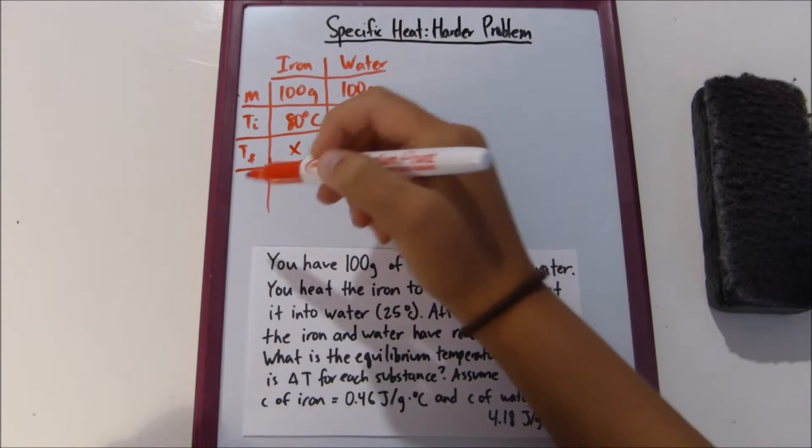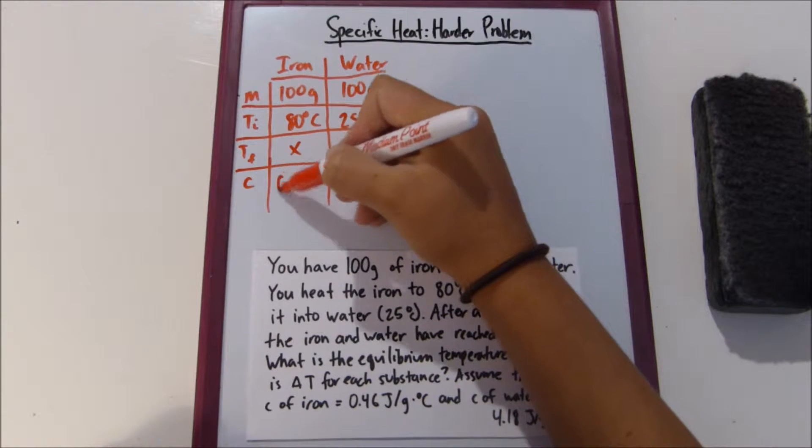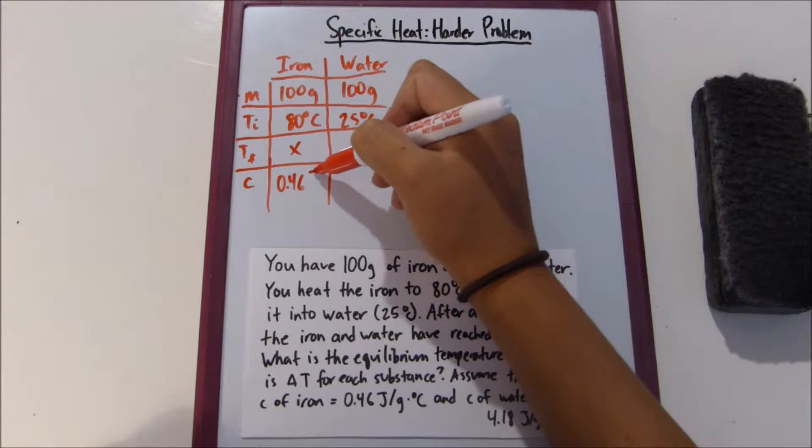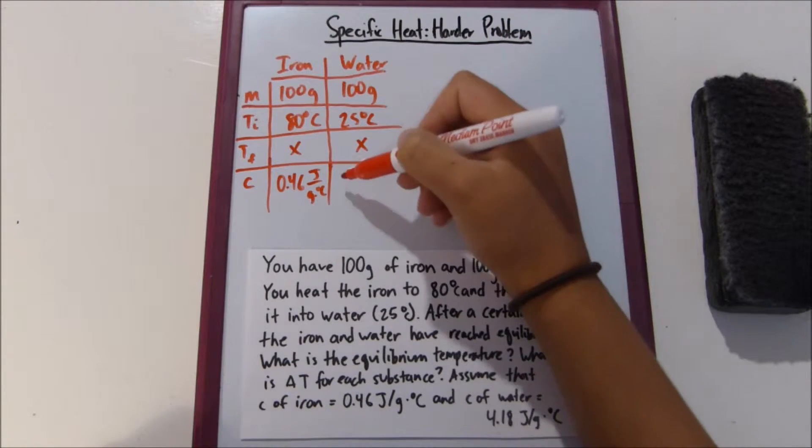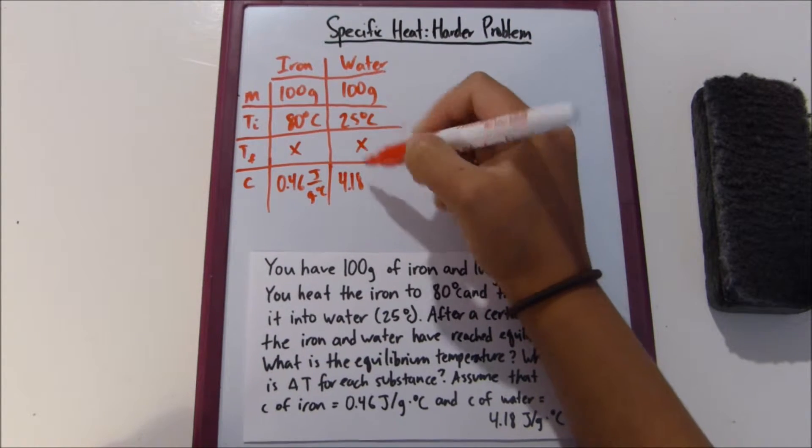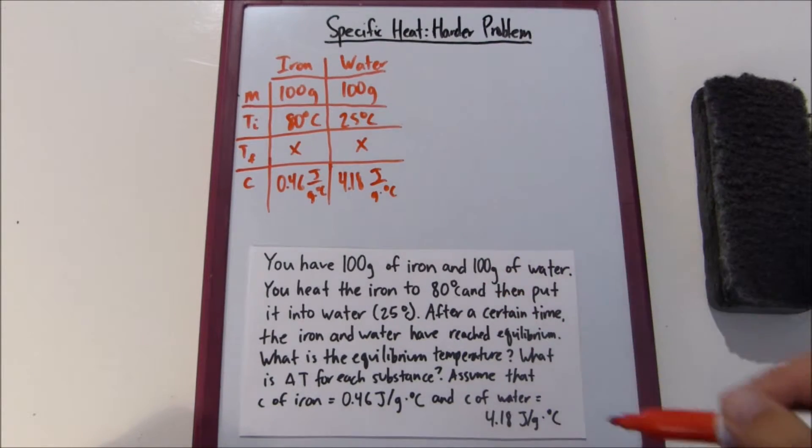Then we have our specific heat, so for iron, 0.46, let me see if I can fit this in, joules per grams times degrees Celsius. Then we have water, 4.18 joules over grams, degrees Celsius.